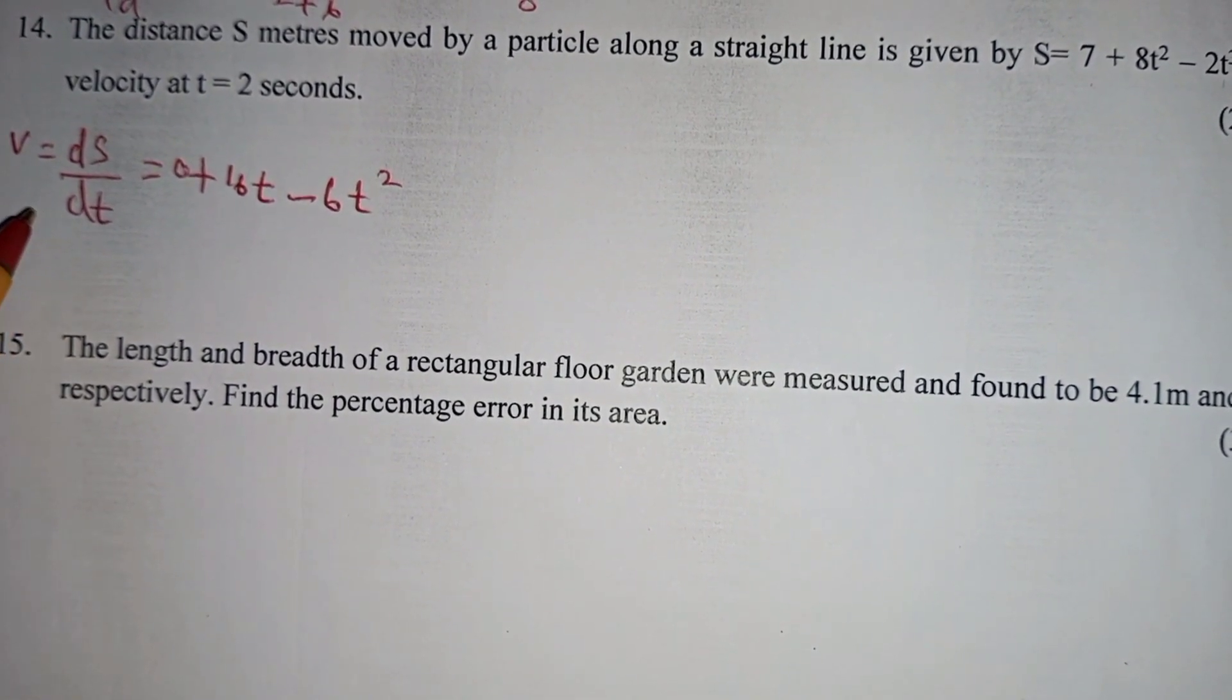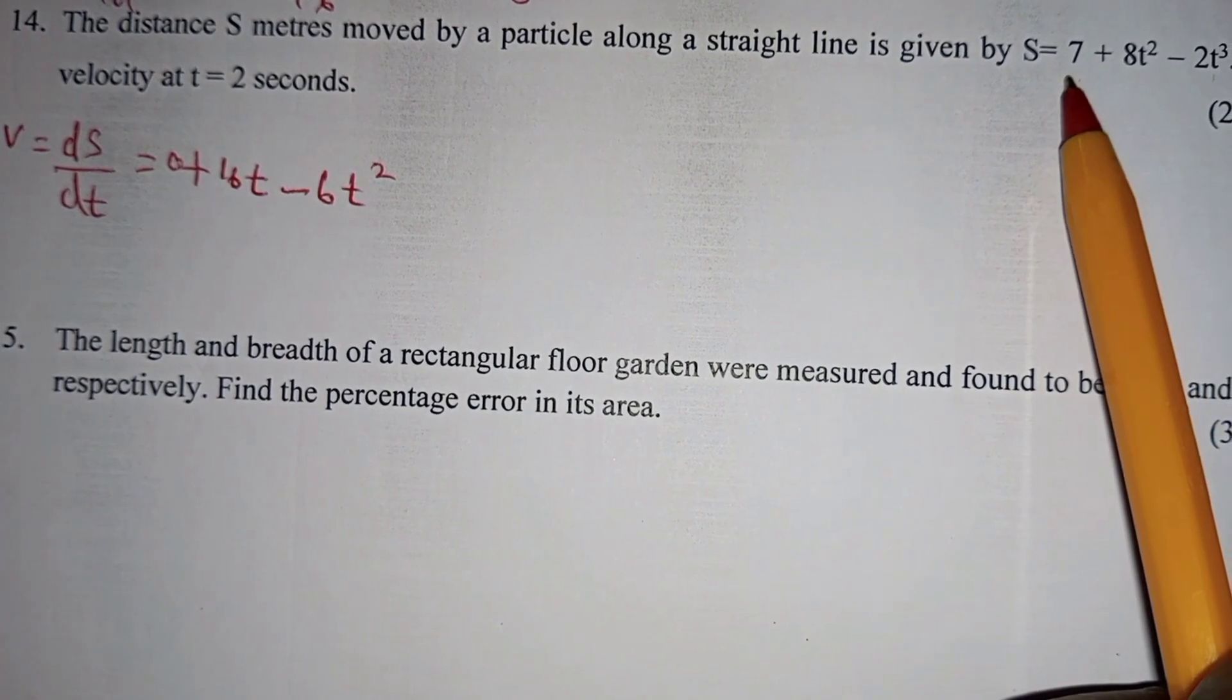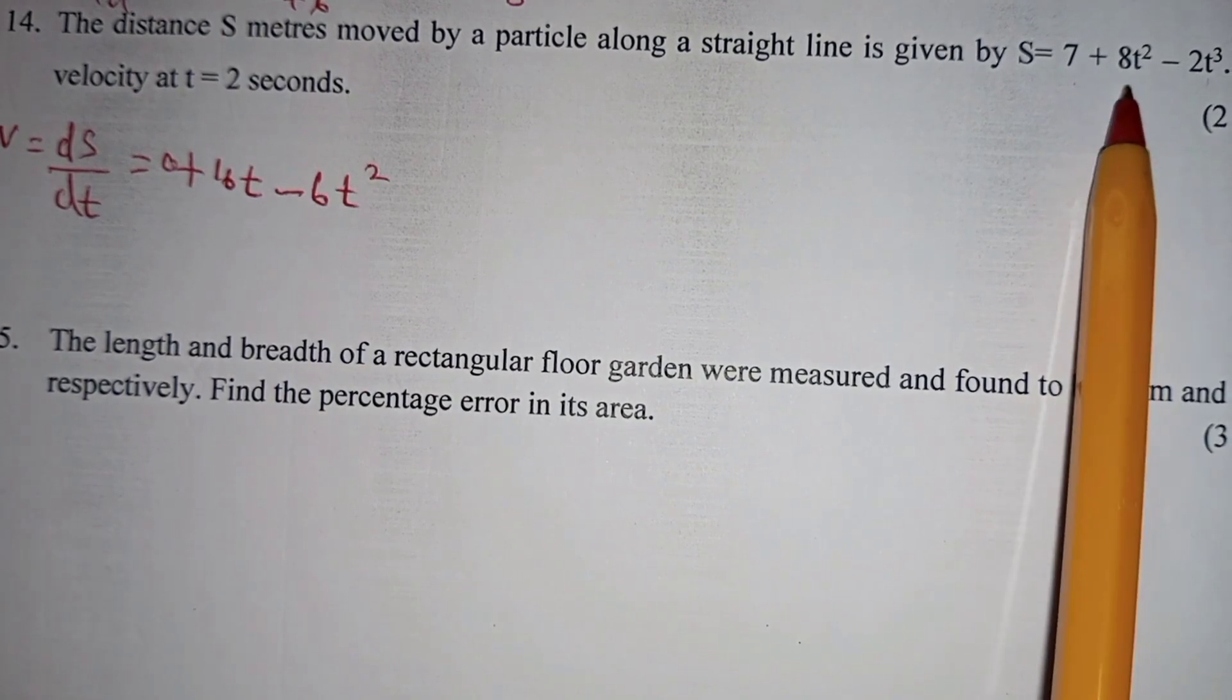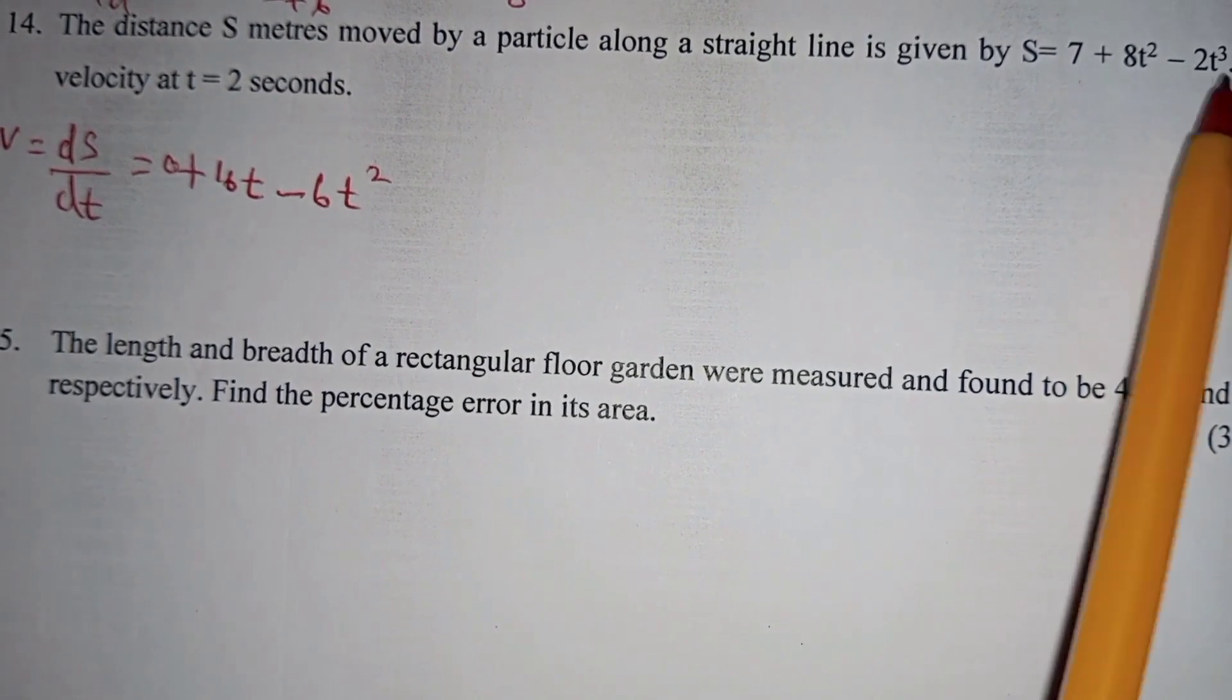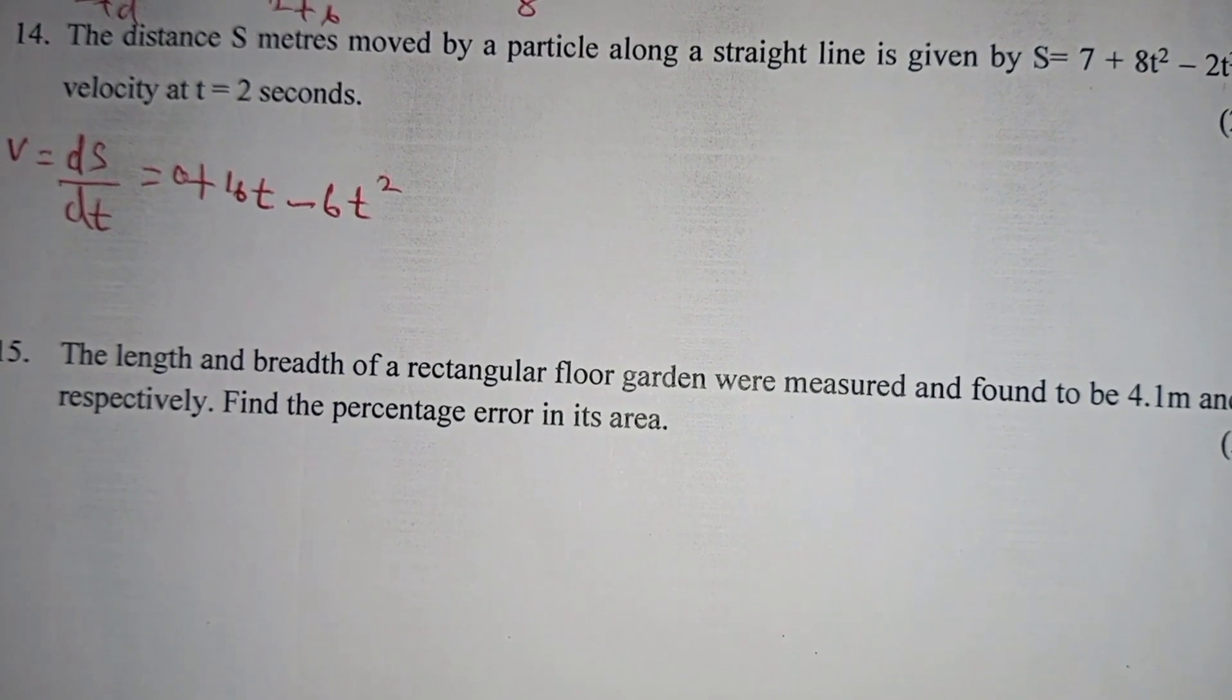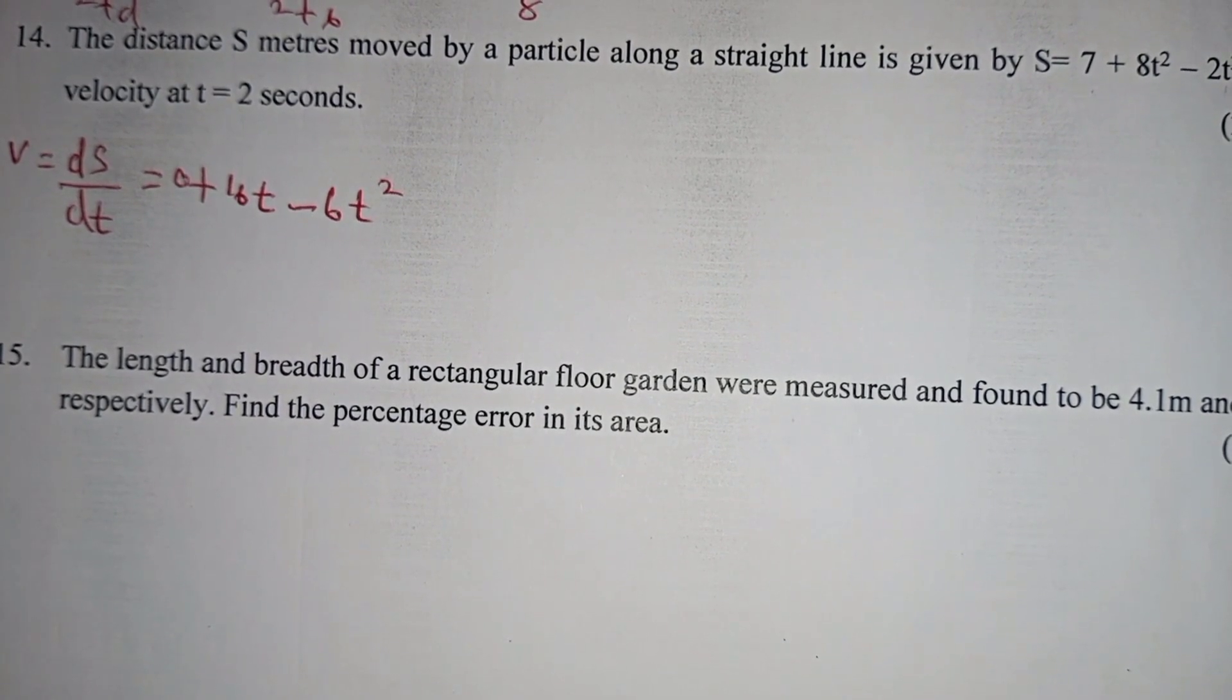The rate of change of displacement per unit time gives you velocity. I have differentiated this term here term-wise. 7 differentiated will give you 0. 8t squared differentiated will give you 16t. Minus 3t cubed differentiated will give you negative 6t squared. On how to differentiate, find in my YouTube channel where I have covered a number of questions pertaining differentiation in simple method steps.